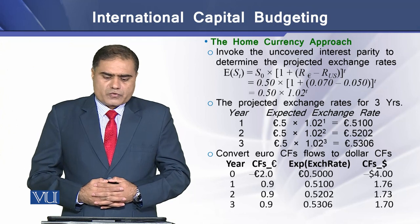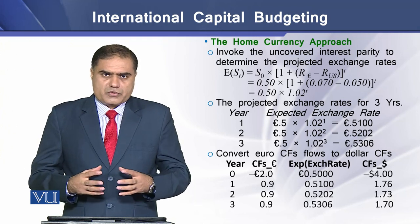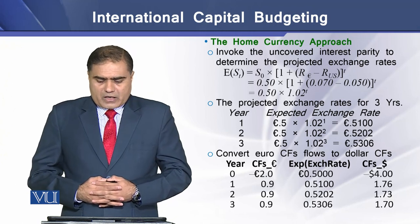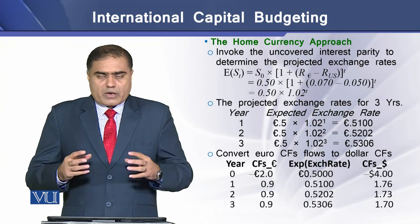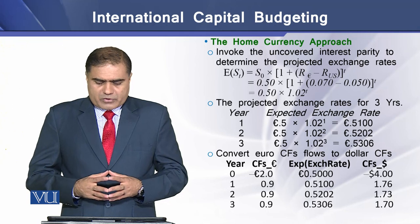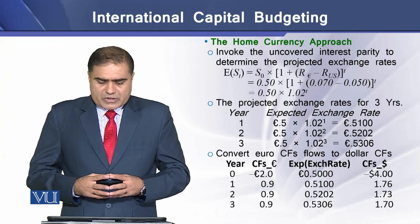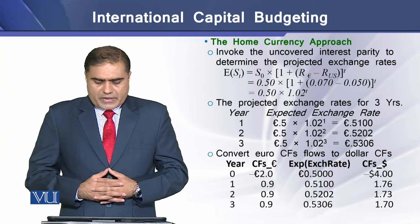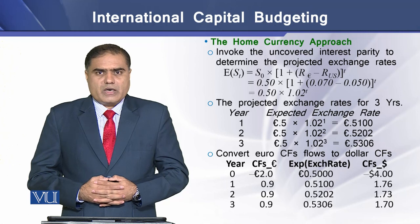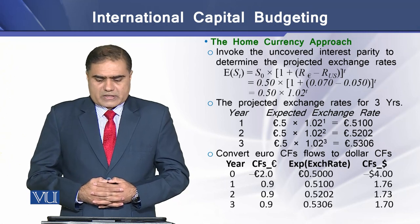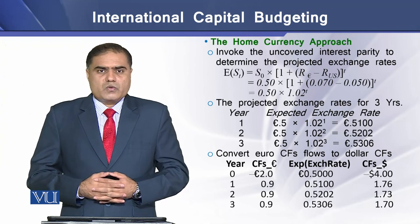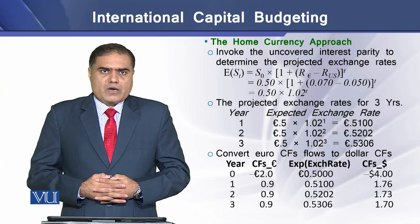In the home currency approach, we work in two steps. First, we need to determine the expected exchange rate for this particular project. We have an equation whose output starts with 0.5, the spot exchange rate, which we multiply by the differential of the risk-free rates — 7% for France and 5% for the US. This gives us the expected exchange rate.